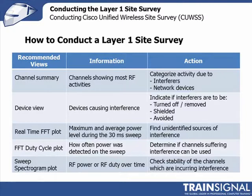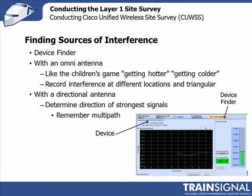One of the most fun things to do with the Cisco Spectrum Expert is to use the device finder, which is the fifth tab. You set up your Spectrum Expert with the omni antenna and walk around looking for sources of interference. It's like that children's game where someone says 'colder, colder' as you move away and 'warmer, warmer' as you get closer, eventually finding the hidden object.